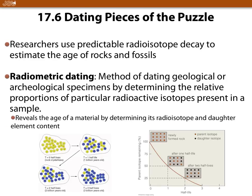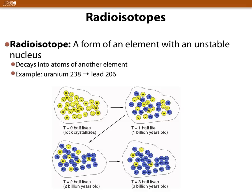How do we date fossils? You've heard this before. Radiometric dating essentially looks for a ratio of isotopes — we know how fast these isotopes decay, so we measure the amount of isotopes in a sample and by some assumptions determine how old it is. For the test, just know what radiometric dating is, what a radioisotope is, and what half-life is.